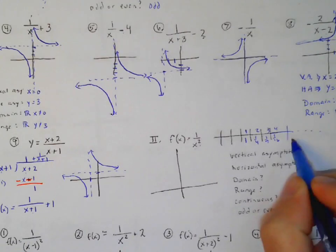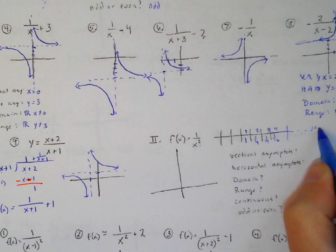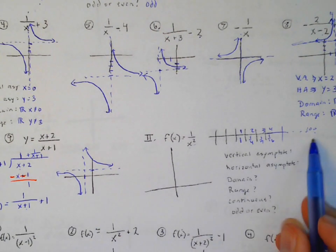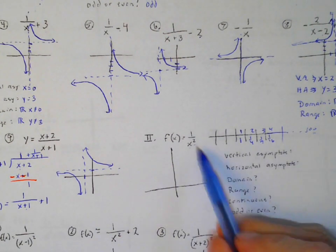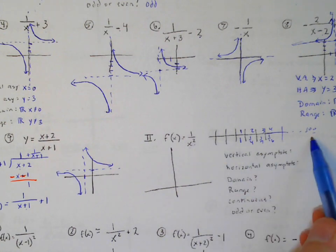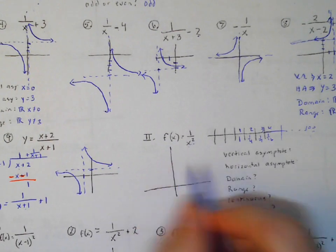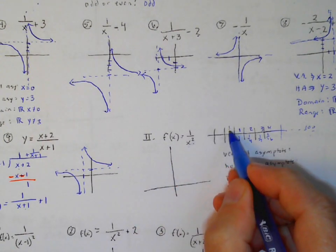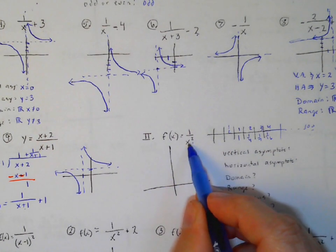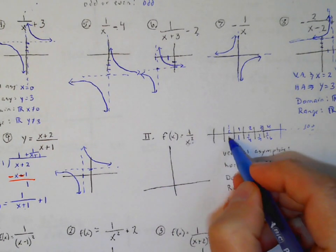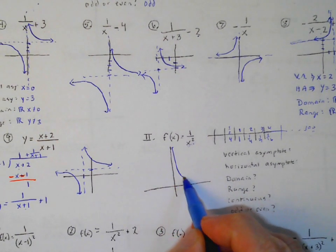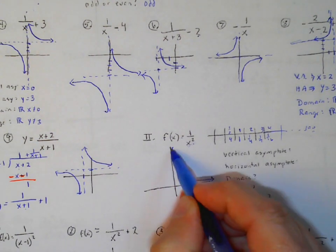As x keeps going out to 100 or a million, it never reaches zero — so this continues approaching zero without touching it. If I plug in 1/2: (1/2) squared is 1/4, and 1 divided by 1/4 is 4. So once again it has this same behavior of shooting up as x approaches zero from the positive side.